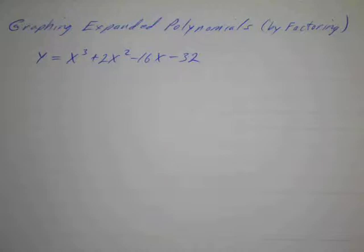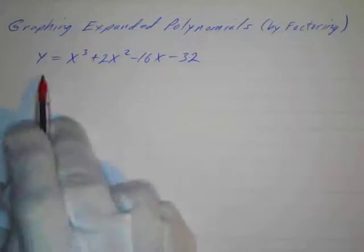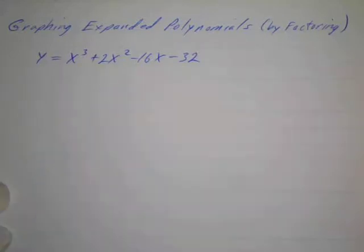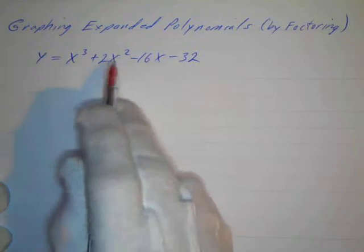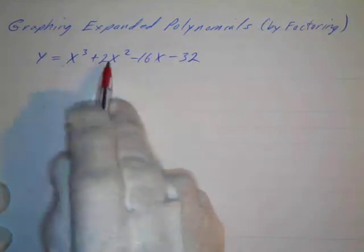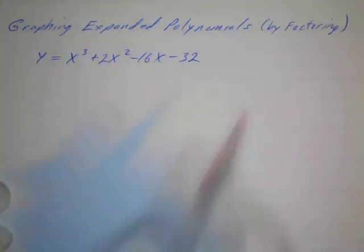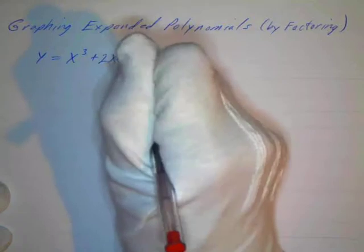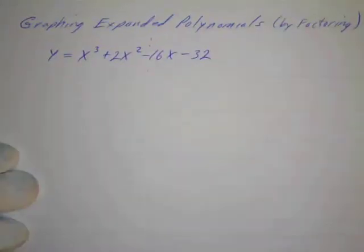So if we take a look at this four-term polynomial, we notice that we can factor an x squared out of these first two terms and I can factor out a negative 16 out of these two terms. So I'm going to see what happens when I do that. Worst comes to worst, I can always look for rational roots, but let's see if we can factor this.